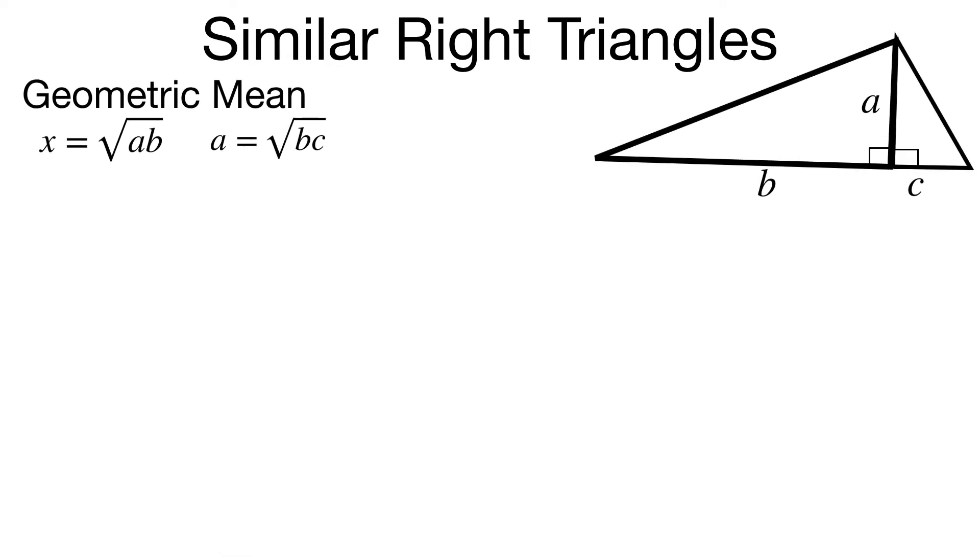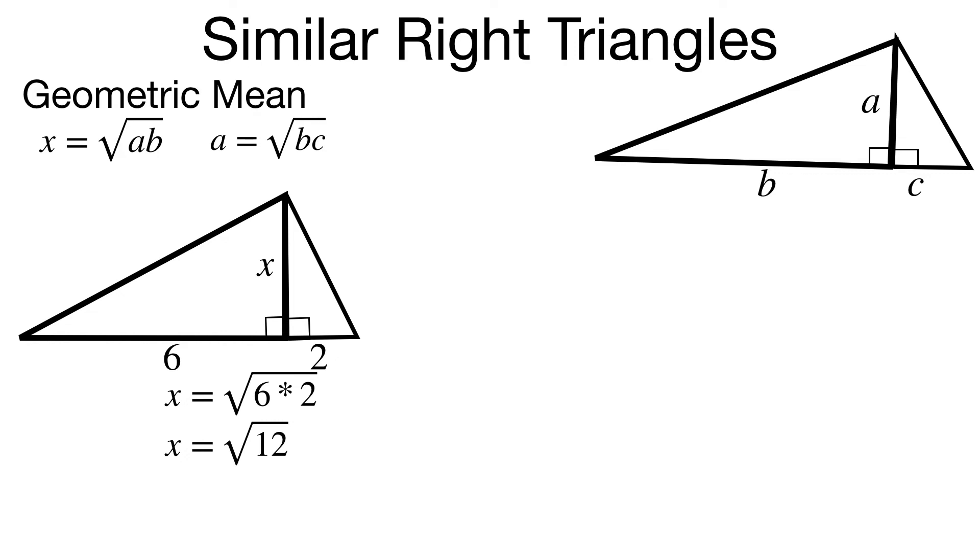Let's look at a couple of examples. First example: I want to find the altitude x, knowing that the hypotenuse length 8 is split into 6 and 2. Take the geometric mean, multiply 6 and 2, you get 12, and under that square root we can reduce that. The altitude's length is 2 radical 3 units.